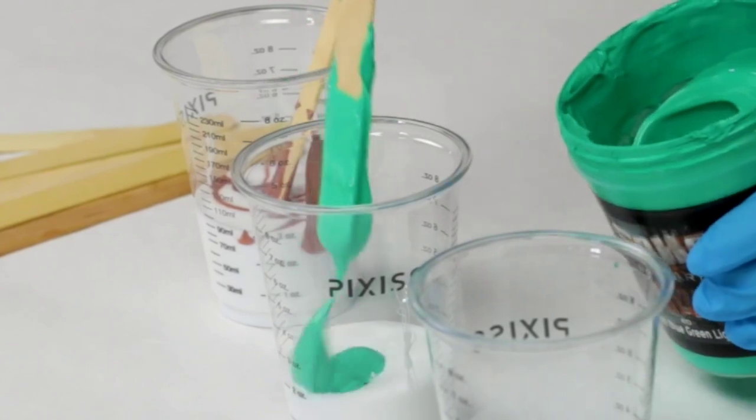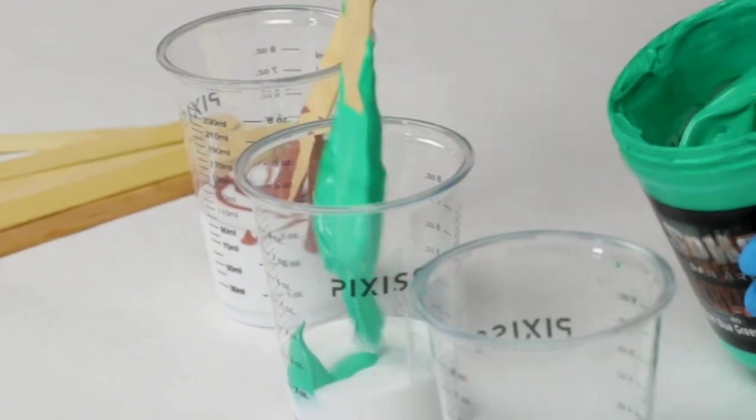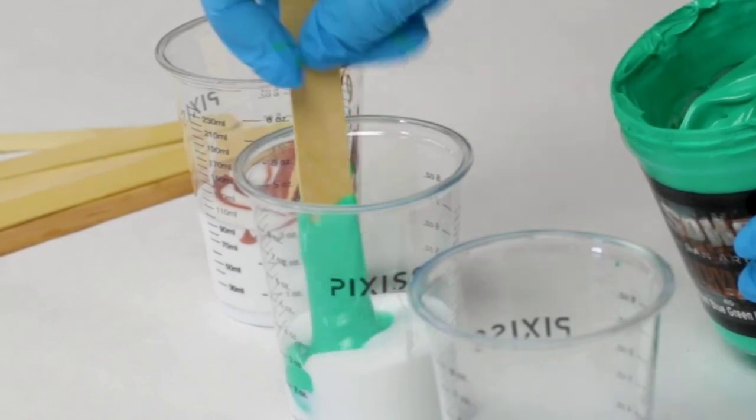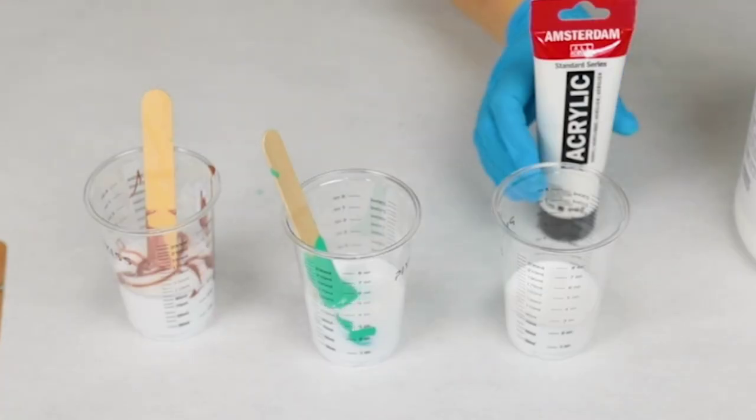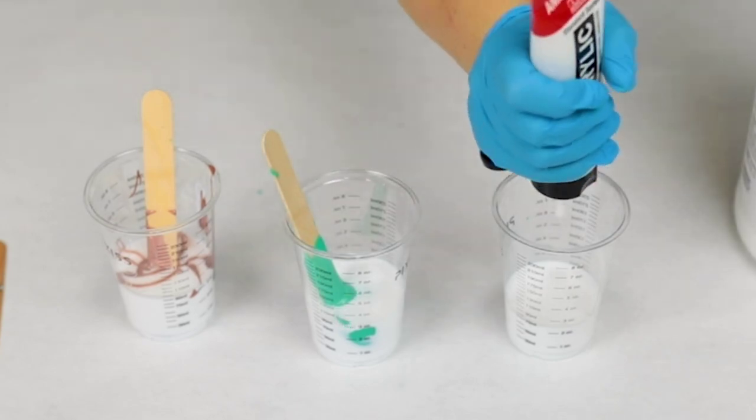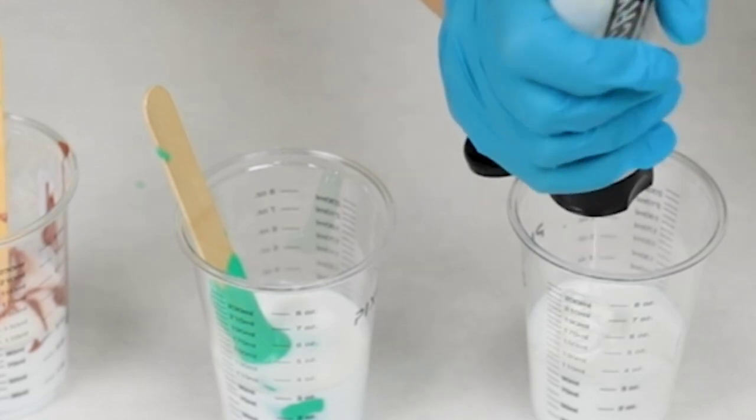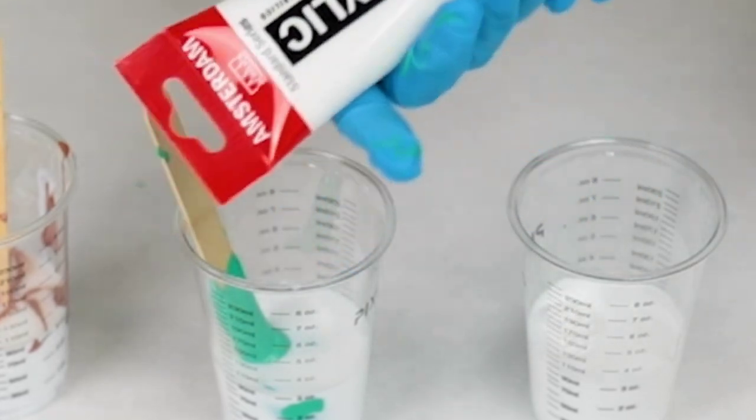The second one here is Soho Cadmium Blue Green Light Hue from Jerry's Artorama. You can see this is really thick compared to that first one. And then I have Amsterdam Acrylics Titanium White, which is actually in between these two in terms of thickness.